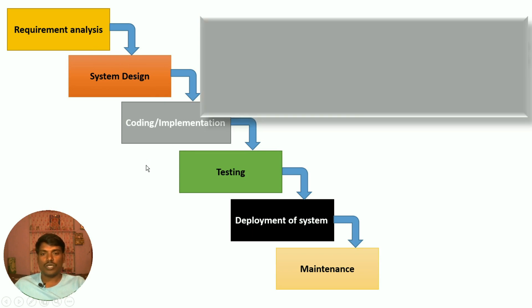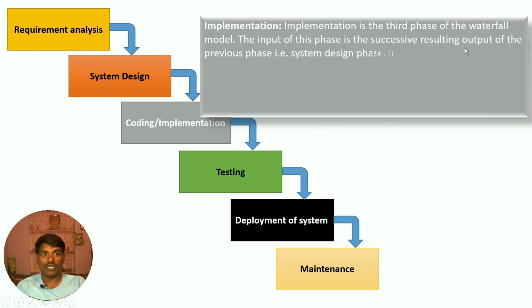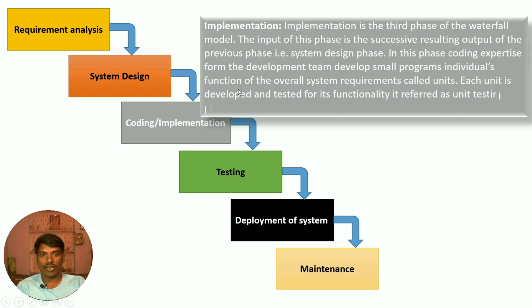Implementation is the third phase of the waterfall model. In this phase, the project is divided into small units. The development team writes code for individual functions of the overall system. Each unit is developed and tested for its functionality — this is referred to as the unit test phase.